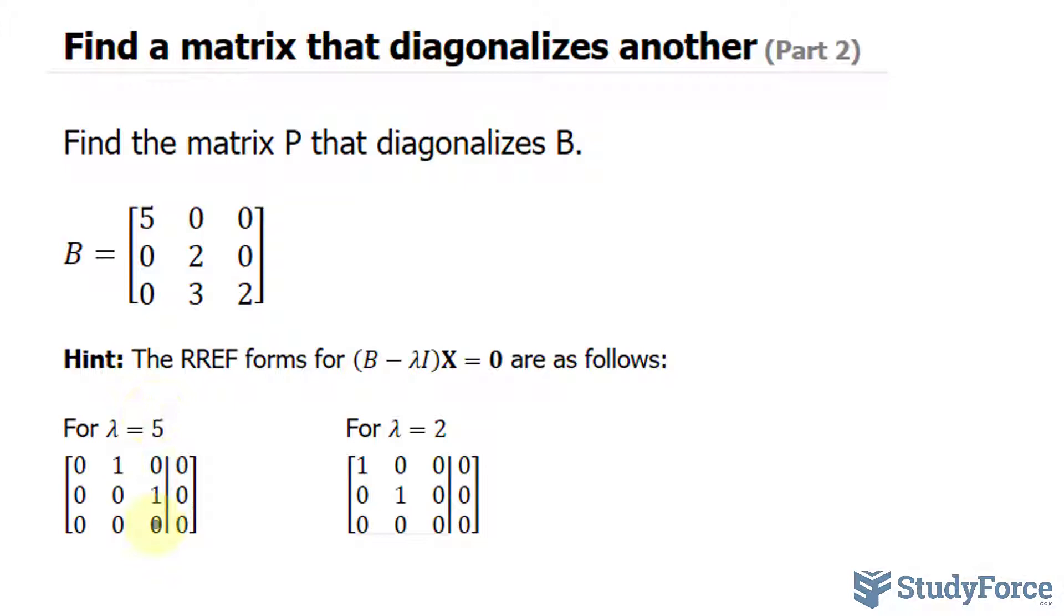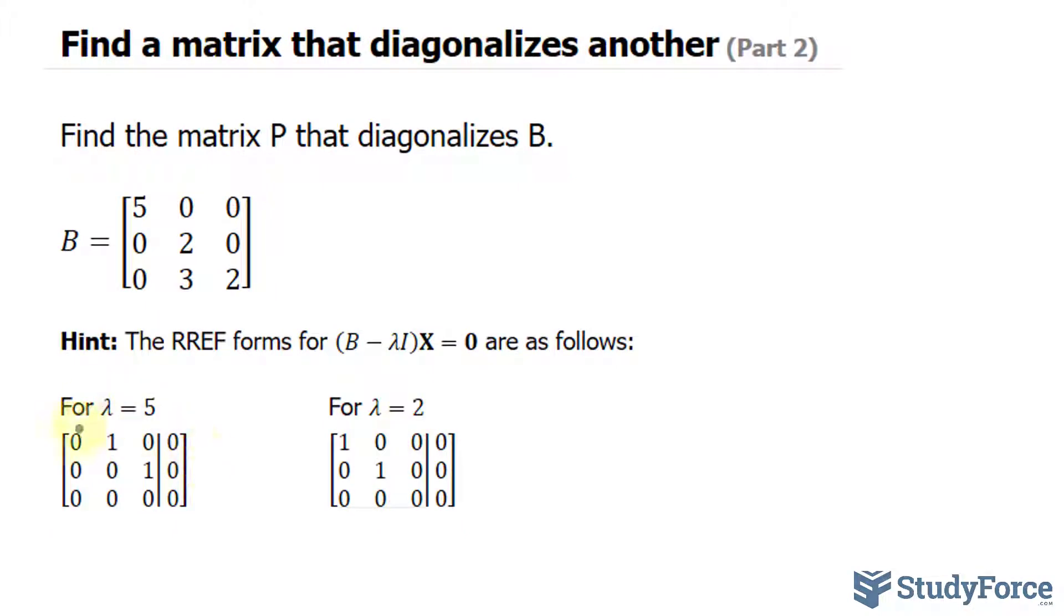And underneath each we have these row reduced echelon forms where we took B, subtracted it by the eigenvalue times its identity matrix, and then row reduced it where we ended up with this. This helps us out quite a lot because we're now ready to find the eigenvectors. We've finished the eigenvalue part, they've given us this hint, and we don't have to go through that.